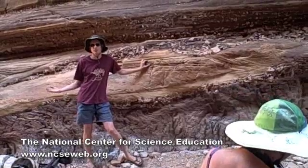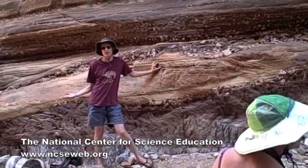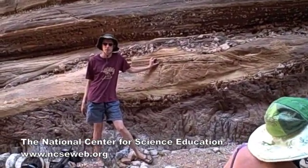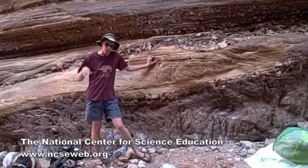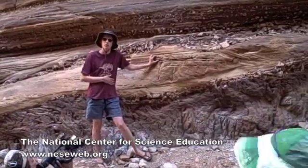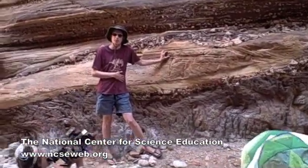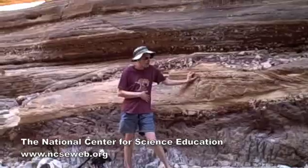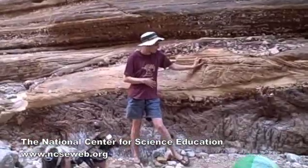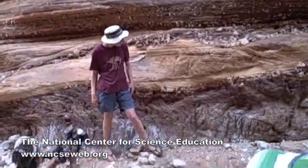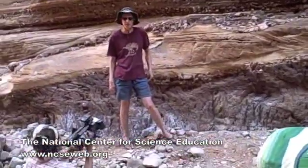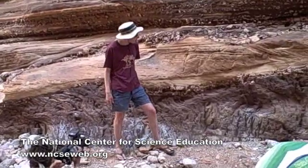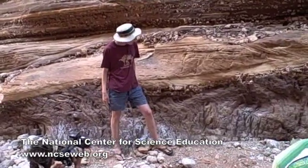The only place we see massive crossbeds forming today are in wind-driven dune fields. Think about the size of the sand dunes in the Sahara Desert versus the ripples you see underwater scuba diving offshore — they're not nearly as big, and that has to do with the ability of water to transport and stack up sediment.